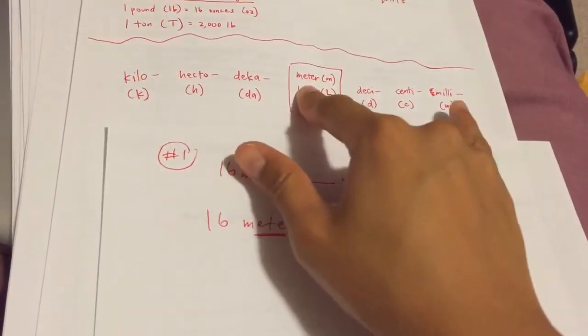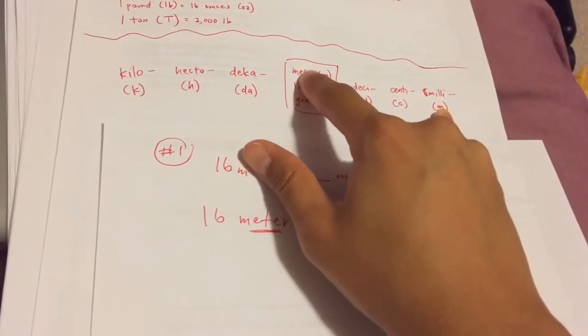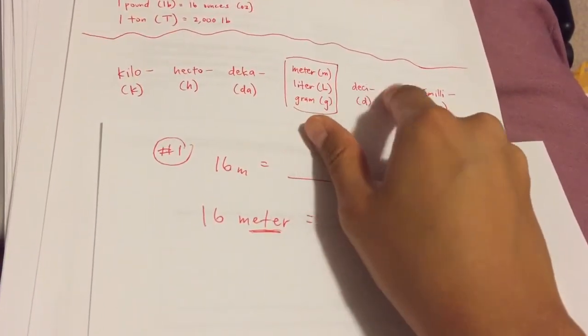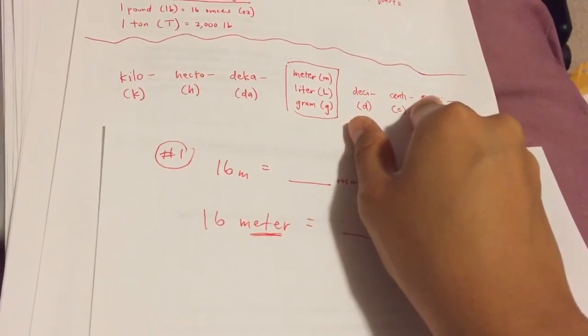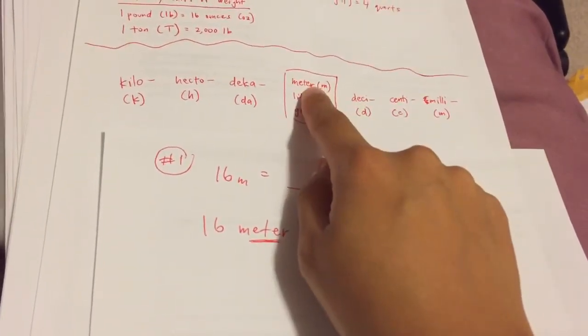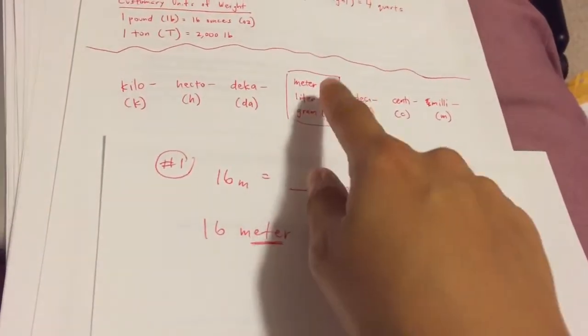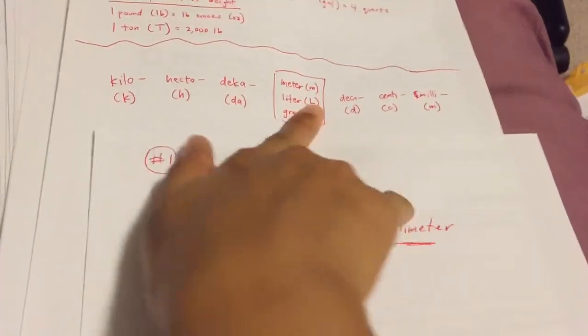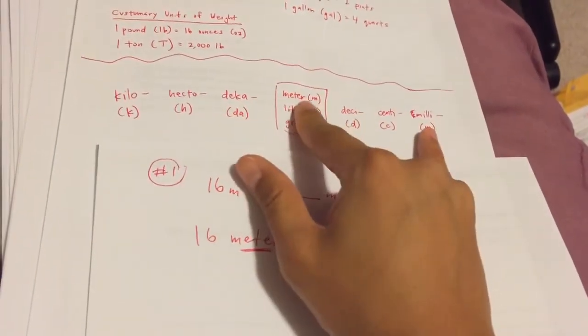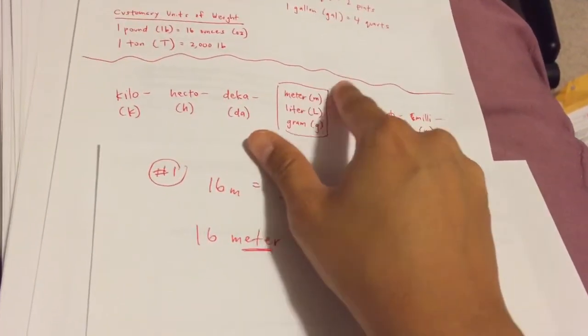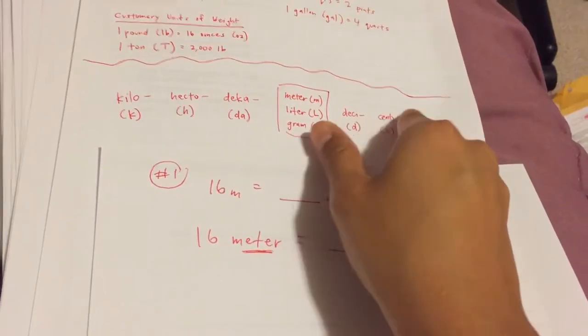How do you get from meter to millimeter? Let's count the steps. We'll move over one, two, three times. You see how I'm shifting to the right? Starting at meter and ending at millimeter, you're shifting one, two, three times.